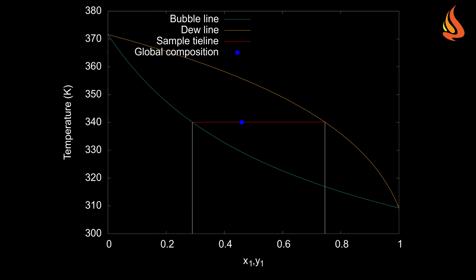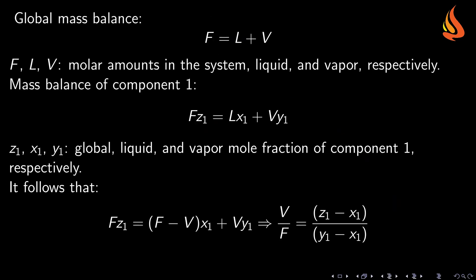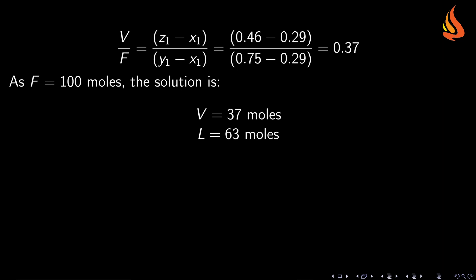To find the phase amounts, we need to use the mass balance. The first equation on this slide is the global mass balance. F represents the total amount and L and V represent the amounts in the liquid and vapor phases respectively. Next, we write the mass balance for component 1, which is the second equation on this slide. These two balances can be combined and after some steps of algebraic manipulation, one finds a relationship for the ratio V over F, which is the vaporized fraction, that only depends on the global composition and on the phase compositions. This is the final equation on this slide. Using the numbers available for this problem, we find that the V over F ratio is equal to 0.37. As the system has 100 moles, 37 of them will be in the vapor phase and 63 in the liquid phase.